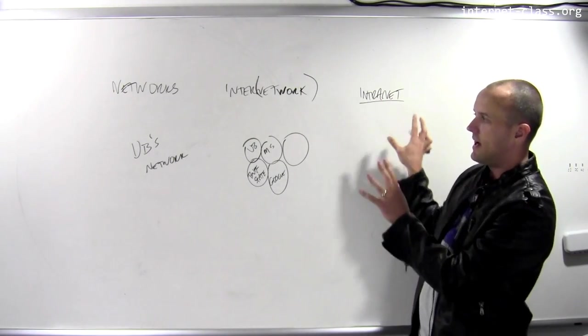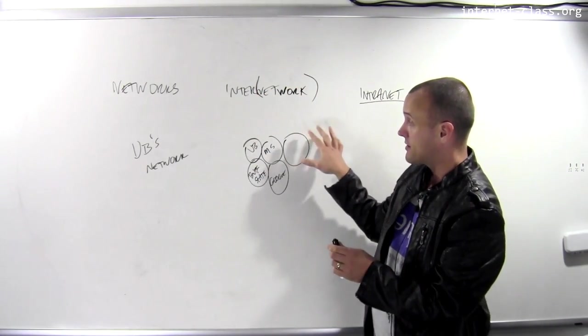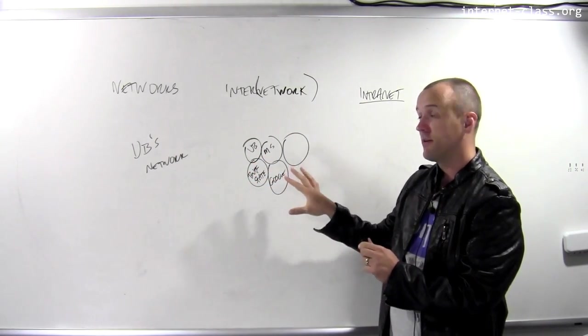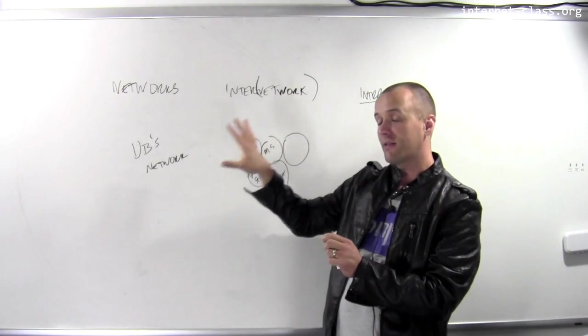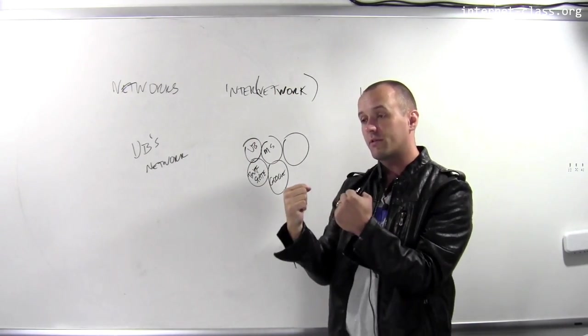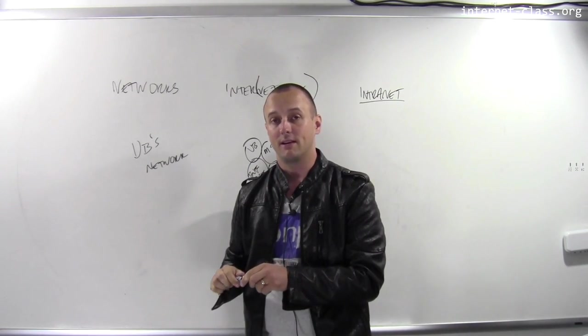Three terms: intranet, not necessarily super related to what we're doing; internet or inter-network, a network of computer networks that agree to exchange data in common ways; and computer network, referring to computers that are physically connected together, operated and maintained by a single organization or entity.